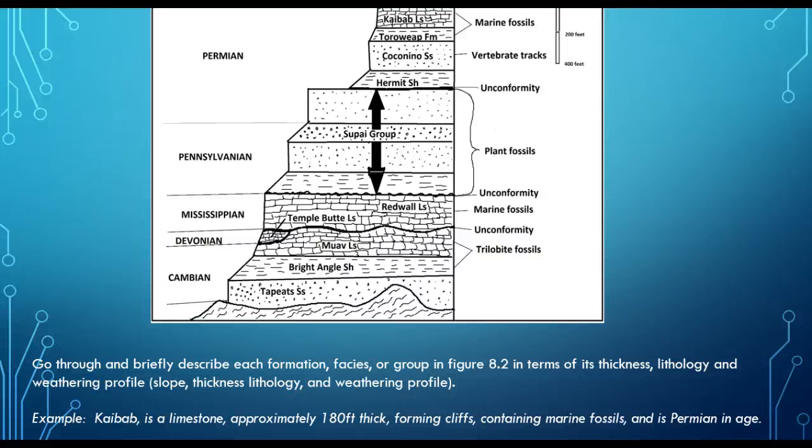As an example, let's look at the Kaibab up at the top. When you're going through for this section and doing that description, you would write down which section you're looking at. The Kaibab is a limestone. I know this by looking at Appendix A. I know what that symbol, those blocks mean. I can use the scale over to the side in that image to identify approximately how thick it is. It's about 180 feet thick. Looking at this image, I see that the Kaibab is going straight up and down. When I see in a cross section like this, a set of lines that are going straight up and down, that's indicating a cliff. So I'd write in there that it's forming a cliff. I also know that it contains marine fossils and that it's Permian in age.